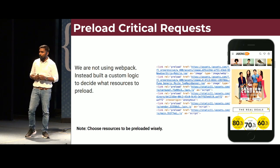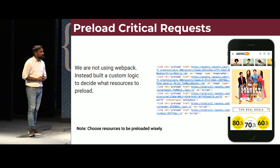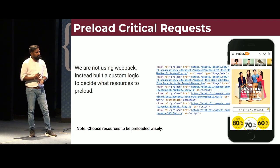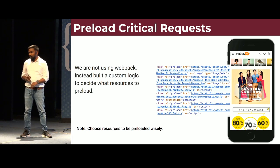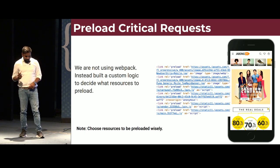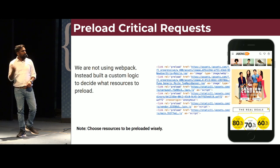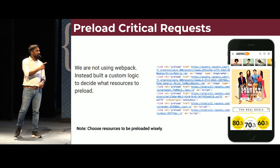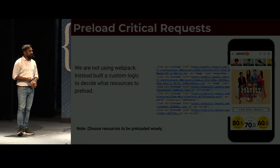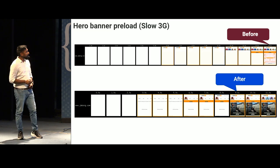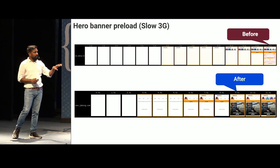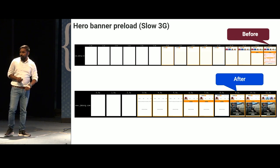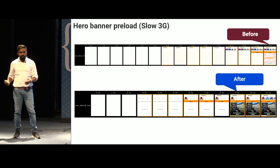For preloading critical resources, beyond typical JavaScript, CSS, and fonts, the most critical part was hero banner preloading. This helped preload the banner much earlier than when it was requested. You can see this comparison before and after in slow 3G — the hero banner renders noticeably faster after. This is the impact of realizing you can preload main content like the hero banner on your web application.